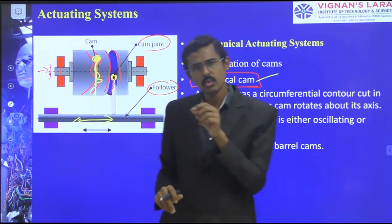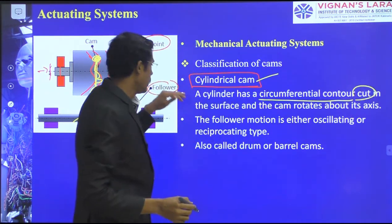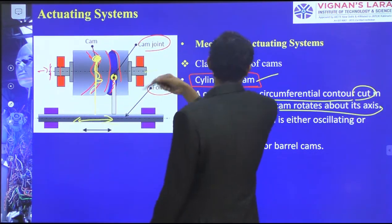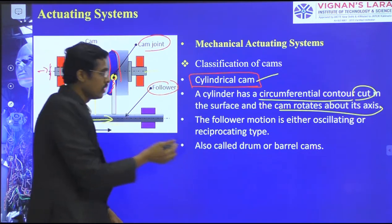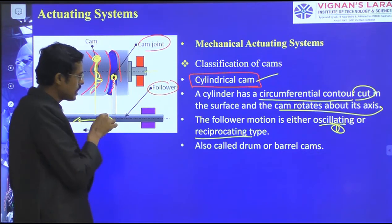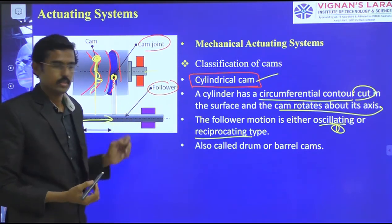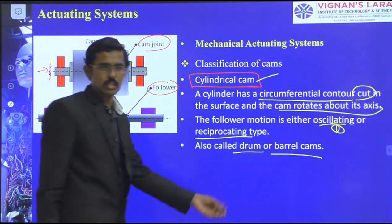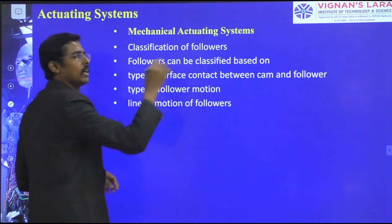The CAM rotates about its axis, and the follower motion is either oscillating or reciprocating. The follower can move up and down or oscillate. The cylindrical CAM is also called a drum CAM or barrel CAM. These are the ways we generally identify cylindrical CAMs.